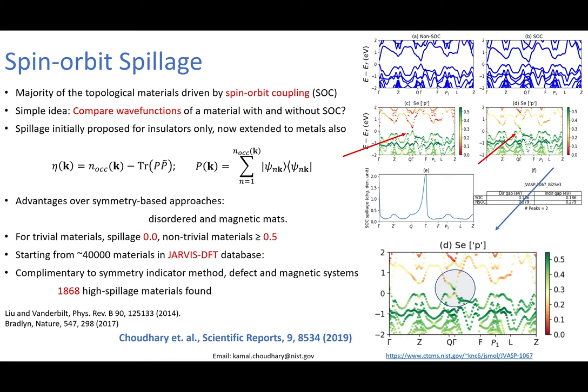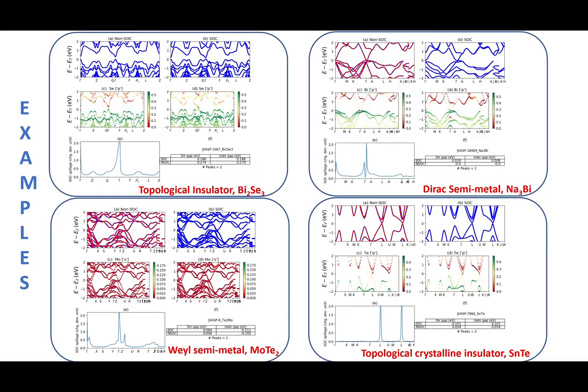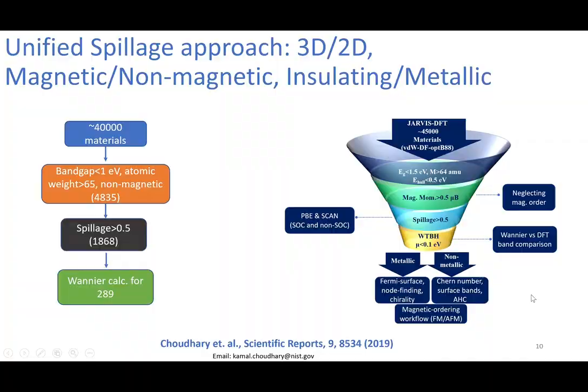This can be a fractional number for metals, for example, or it can be integers representing the number of band-inverted electrons. Here are a few examples of topological spillage for some of the most commonly known topological materials such as bismuth selenide, which I explained, but it can be used for Dirac semi-metal, Weyl semi-metal such as molybdenum ditelluride, topological crystalline insulator like tin telluride, and so on.